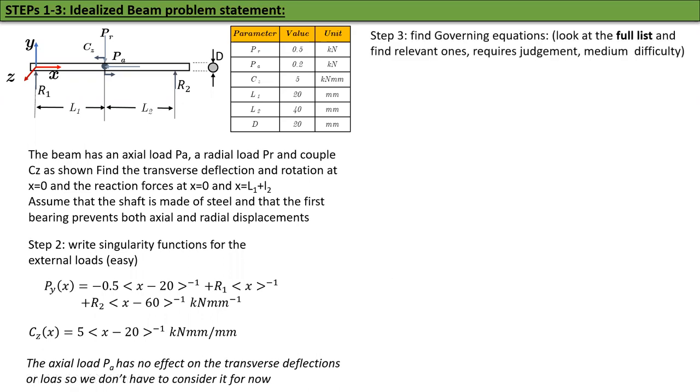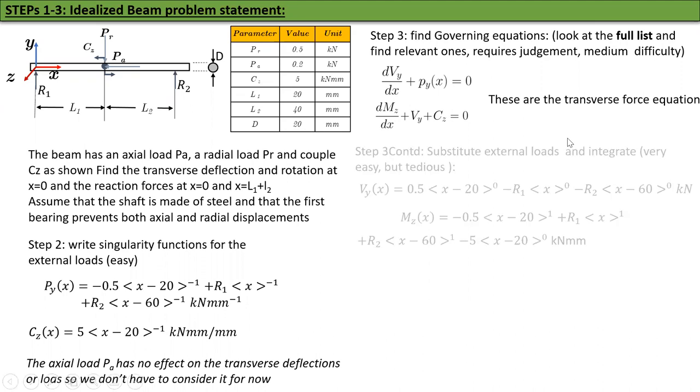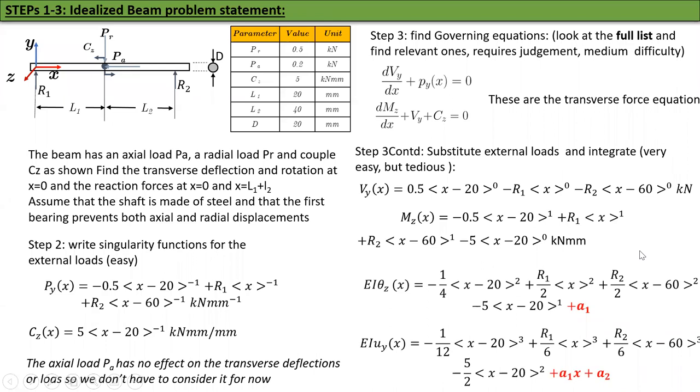Now we are ready to do the governing equations and solve it. Our governing equations are dVY/dX plus PY equal to zero, dMZ/dX plus VY plus CZ equal to zero. Take PY of X, substitute here, integrate once, you'll get VY. Take that VY, substitute in the next equation, add this CZ and integrate again. Please remember EI is constant because the diameter of the shaft is constant. So I can do EI theta Z and EI UI. If you do not know how I got this, please refer to the previous video.